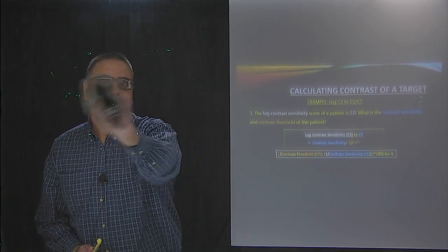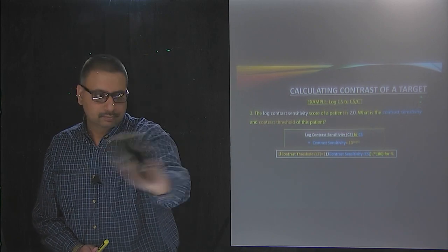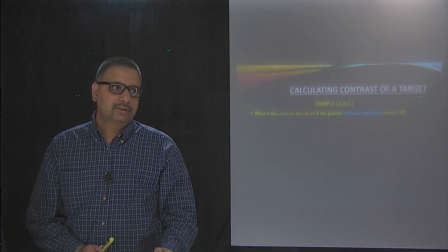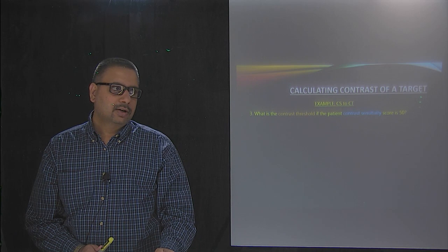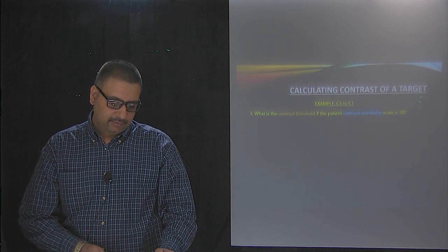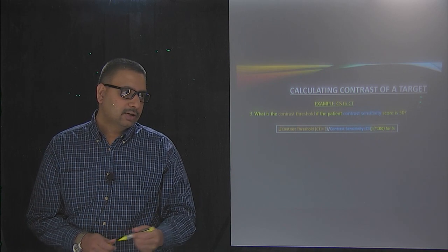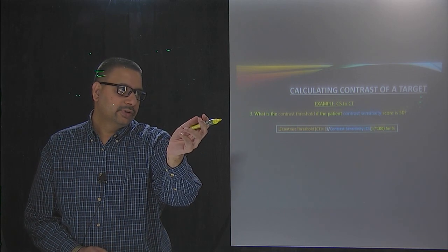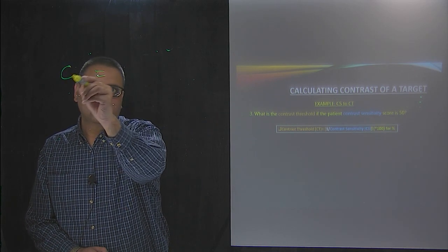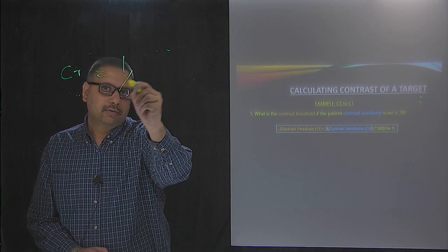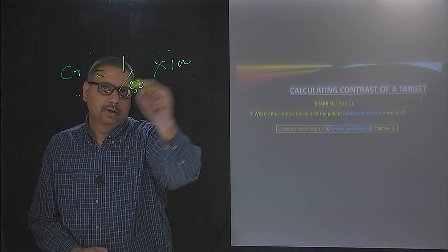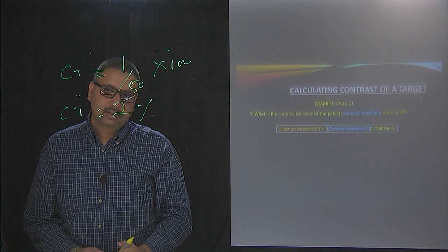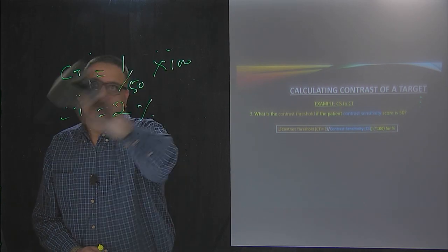One more similar problem: what is the contrast threshold if the patient's contrast sensitivity score is 50? The contrast threshold is 1 divided by 50, multiplied by 100, which equals 2. So the contrast threshold is 2 percent for this particular problem.